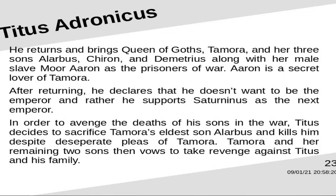Aaron is a secret lover of Tamora, though he is her slave. After returning, Titus declares that he doesn't want to be the emperor and rather supports Saturninus as the next emperor. In order to avenge the deaths of his sons in the war, Titus decides to sacrifice Tamora's eldest son Alarbus and kills him, despite desperate pleas of Tamora. Tamora and her remaining two sons then vow to take revenge against Titus and his family.